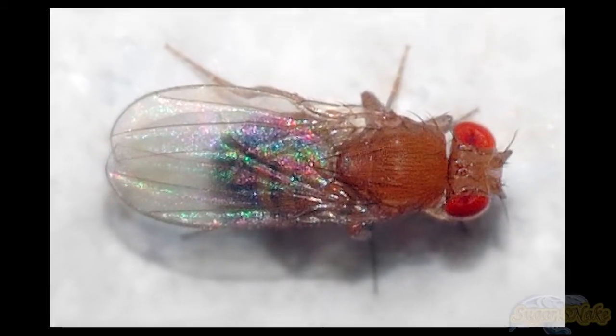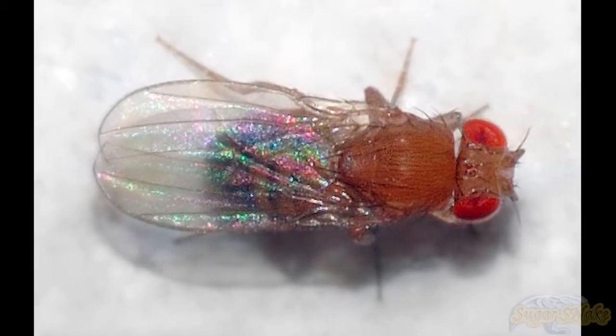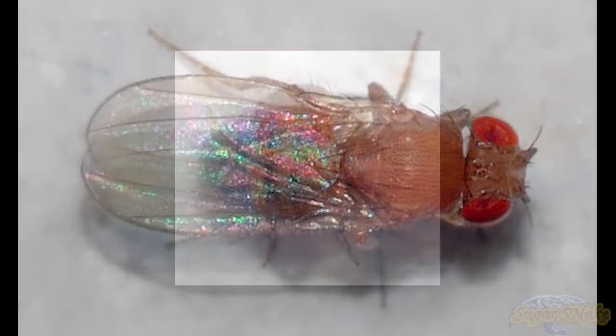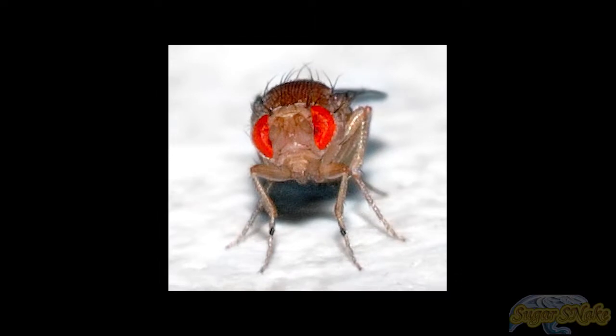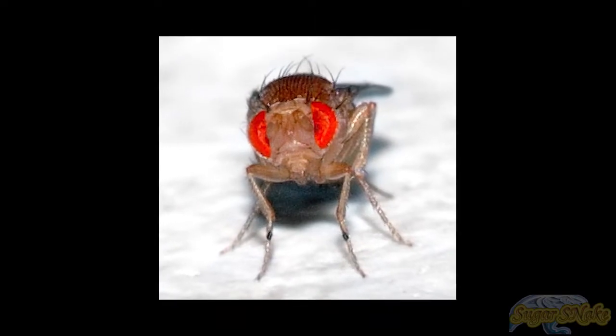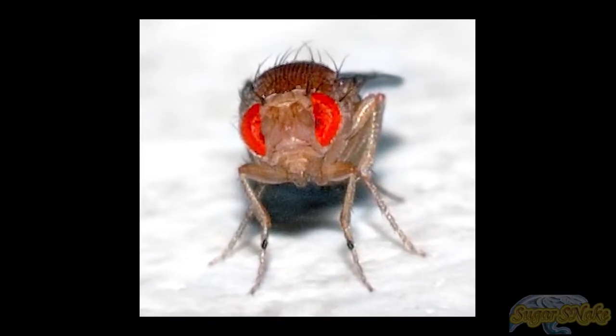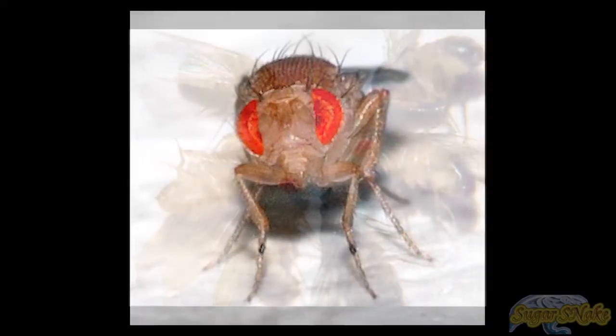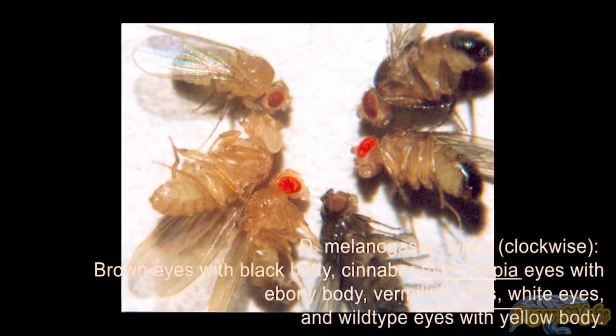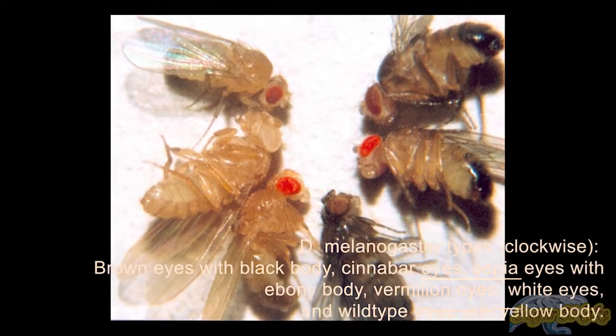Drosophila melanogaster is a species of fly in the taxonomic order Diptera, in the family Drosophilaidae. The species is known generally as the common fruit fly or vinegar fly.